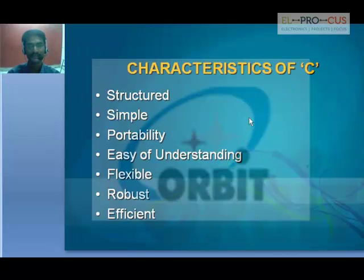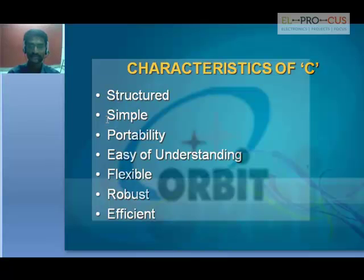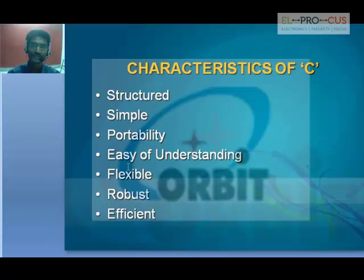The characteristics of C language are: structured — we will see 'structure' at the end of this course as it is a separate chapter. Next come: simple, portable, easy to understand, flexible, robust, and efficient. It is simple compared to previous languages. Flexible means we can take up any project solution using C, which was not possible with previous languages. Robust means very strong, and efficient.